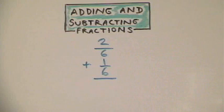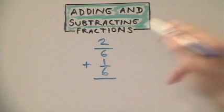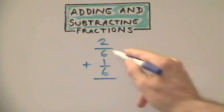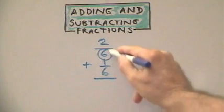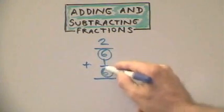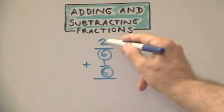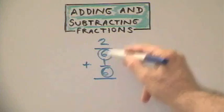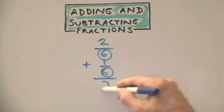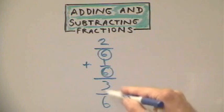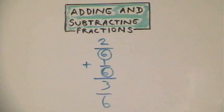Let's look at this fraction problem: 2 sixths plus 1 sixth. Because the denominators are the same, all we do is add the numerator, 2 plus 1, to give us 3, and we keep our denominator. So, our answer will be 3 sixths.